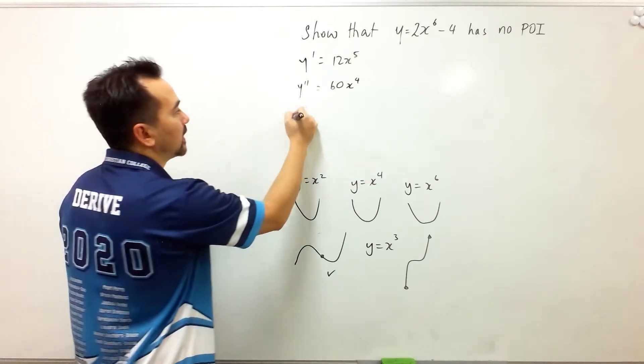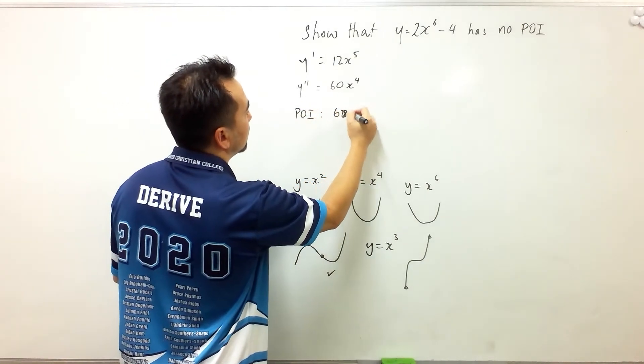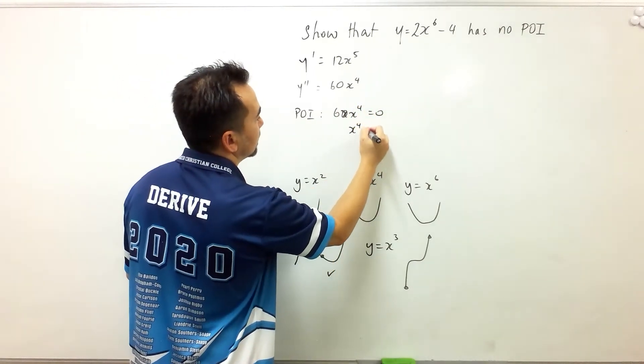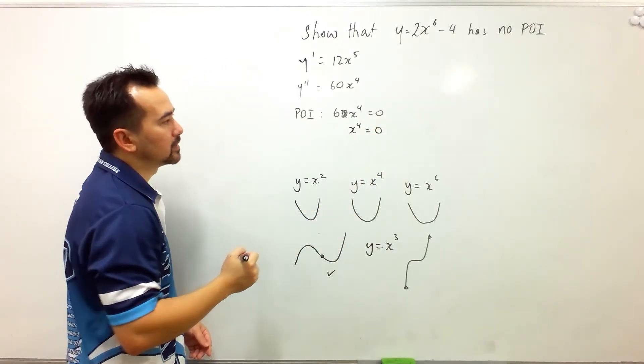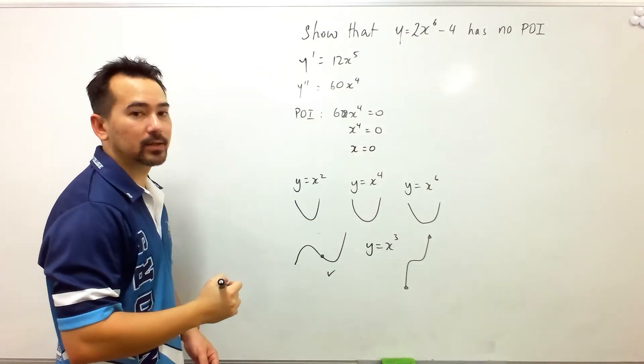Now for points of inflection, we take the second derivative and make it equal to 0. Dividing both sides by 60, I get x to the power 4 is equal to 0. So that means if there was a point of inflection to occur, it would happen at x equals 0.